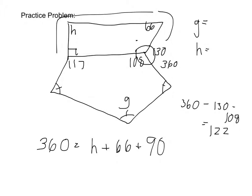So if we know that this is 122, then we can complete our equation here, and if we subtract all of these from 360, we end up with H equals 82 degrees.